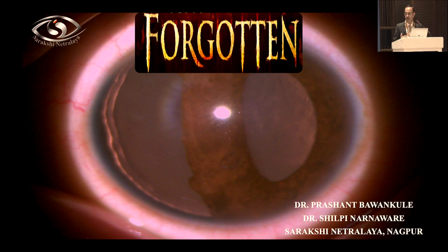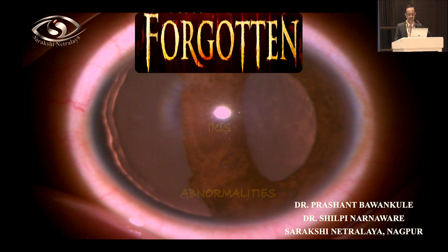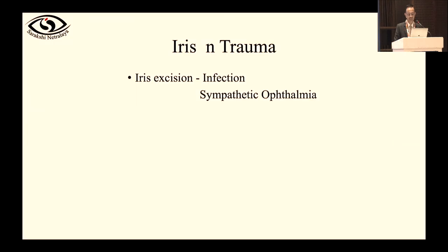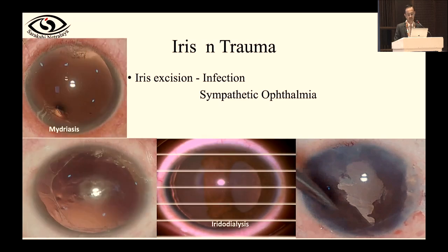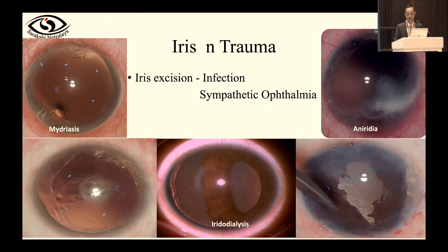I have labeled my presentation 'forgotten' because this is the tissue most neglected in trauma cases. Whenever there is trauma, we repair a cornea, we repair a cataract, we do wonderful retinal surgery, but most of the time when iris tissue is involved we excise it, leaving the patient with a deformed pupil. This is because of a misplaced conception that iris tissue impacted into the wound can lead to infection and sympathetic ophthalmia.